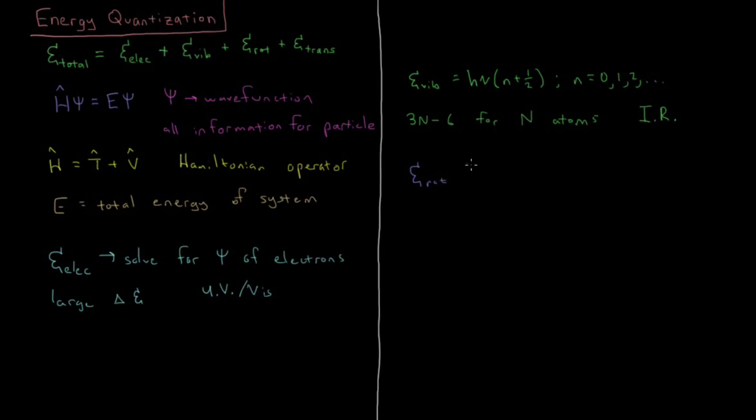Then next, moving on to rotations. Rotations' energies are equal to the reduced Planck's constant ℏ² times a quantum number j times (j + 1) over 2 times the moment of inertia. And the moment of inertia is just dependent on the geometry of the molecule depending on the positions of the atoms and how much they weigh.